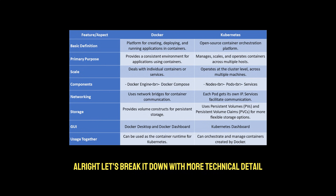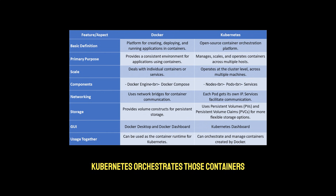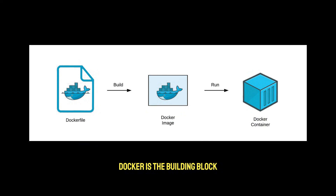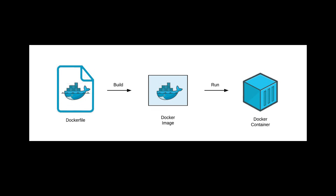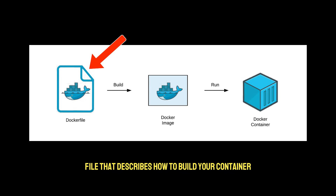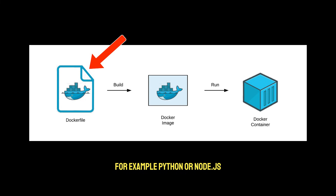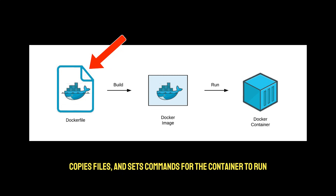Let's break it down with more technical detail. Docker's core role is to package and run applications in isolated environments known as containers. The Dockerfile is a text file that describes how to build your container — it defines the base image, for example Python or Node.js, installs dependencies, copies files, and sets commands for the container to run.